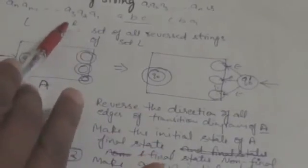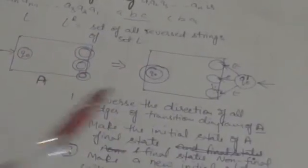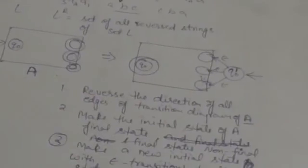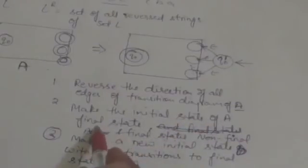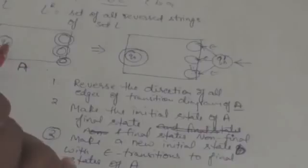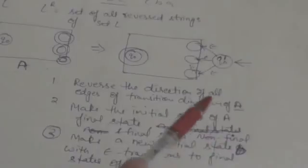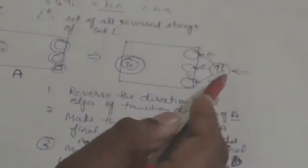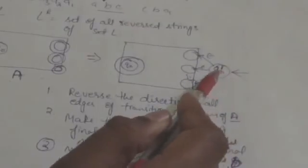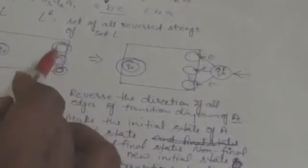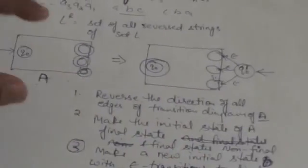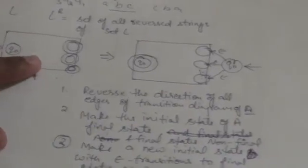We can design an automata for set L^R from automata A. What we have to do: first, reverse the direction of all edges of the transition diagram of finite automata A. Second, make the initial state of A a final state — here Q0 is the initial state, we make it final. Third, make the final states of A non-final. Then make a new initial state Q0' with empty transitions to the final states of A. This new automata will accept the language L^R.